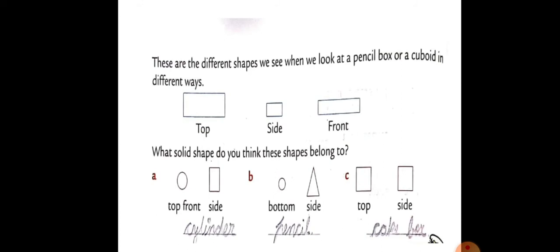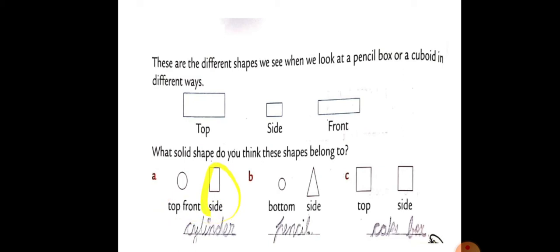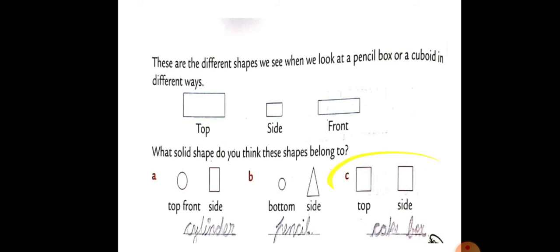These are different shapes we see when we look at a pencil box or a cuboid in different ways. Jab hum pencil box ko dekhte hain toh: top — pencil box ko khada kar dein toh uska top side aise dikhta hai; phir side — uski side aise dikhti hai; aur front — aise dikhta hai. What solid shape does this belong to? Top, front, and side — yeh cylinder ke jaise hain. Phir bottom and side — yeh triangle, matlab pencil ke jaise hain, cone ke jaise. Top and side — yeh box, cuboid ke jaise hai.